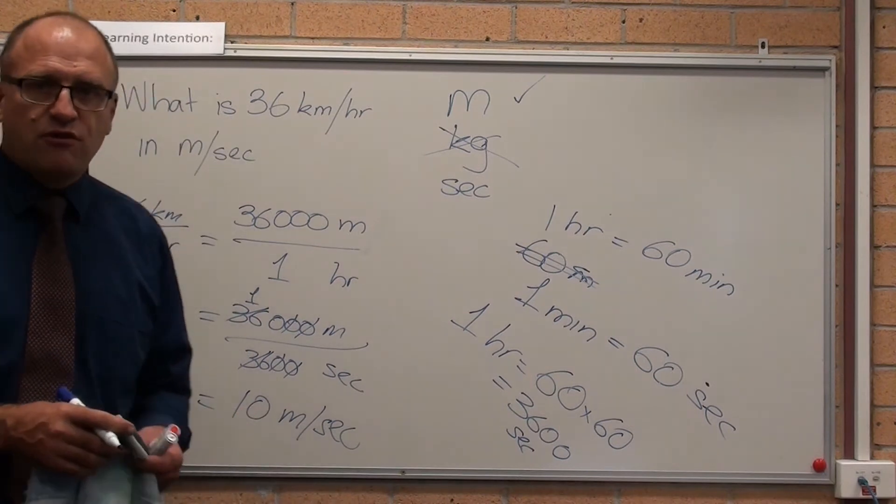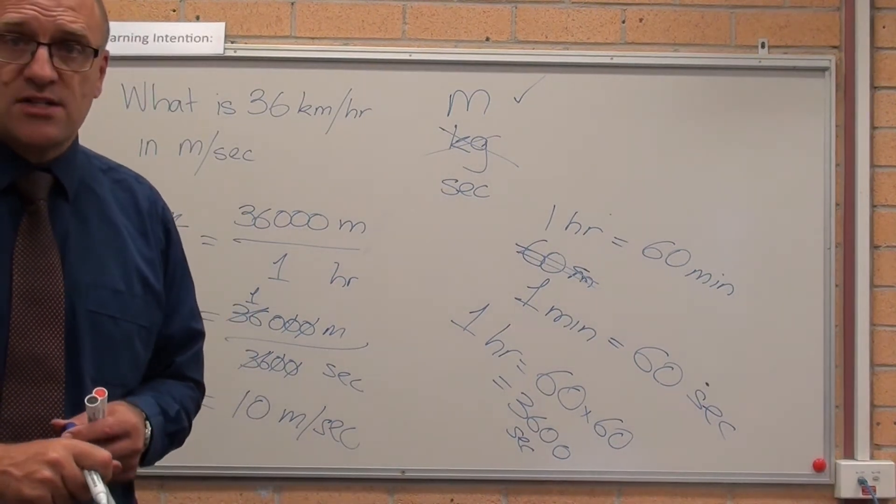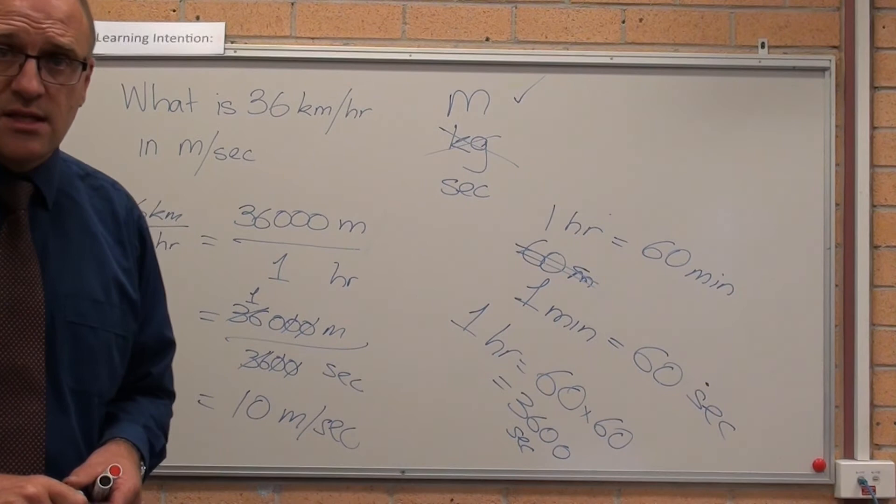So, a car travelling at 36 kilometres an hour travels 10 metres in one second.